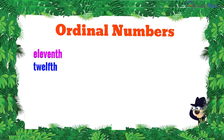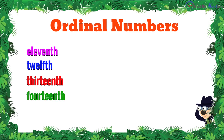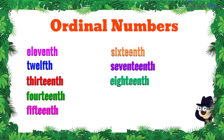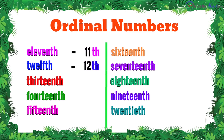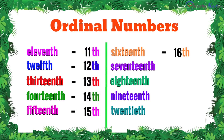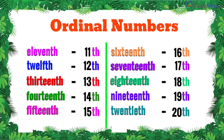Now let's take a look at the word and numeral form of the next ten ordinal numbers: 11th, 12th, 13th, 14th, 15th, 16th, 17th, 18th, 19th, and 20th.